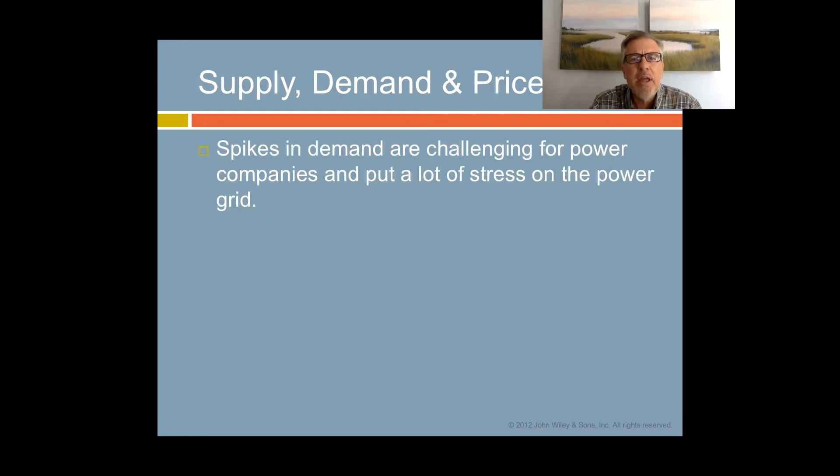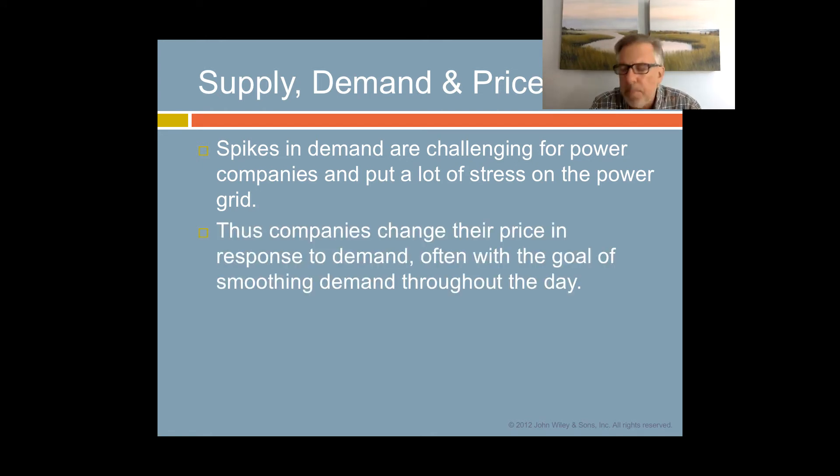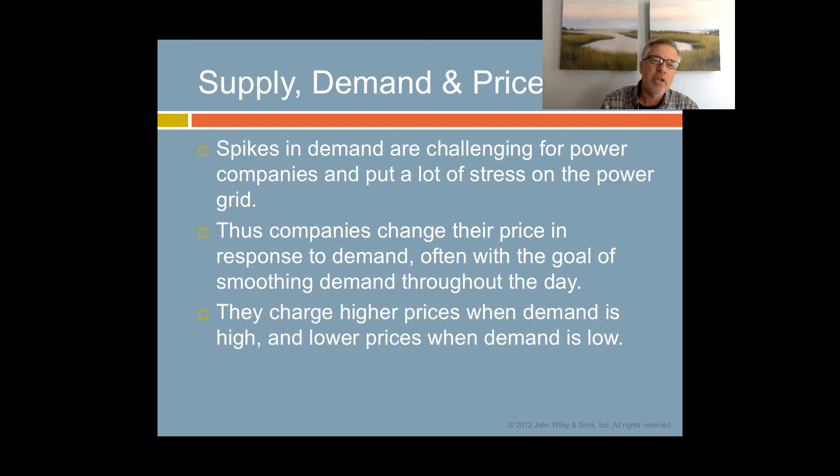These spikes in demand are challenging for power companies and put a lot of stress on the power grid. Thus, companies change their price in response to demand. The goal of changing the price is to try to smooth the demand throughout the day. Electric energy prices are higher when demand is high and lower when demand is low. That is a price signal that, hey, if you possibly can, use electricity at the times when it's cheaper.